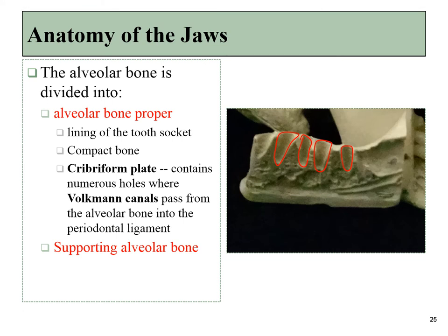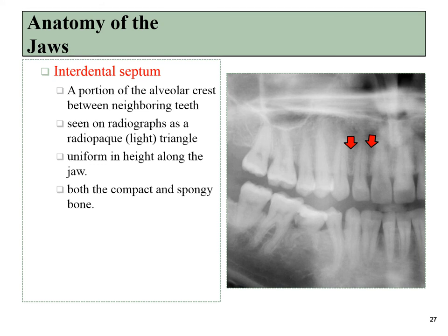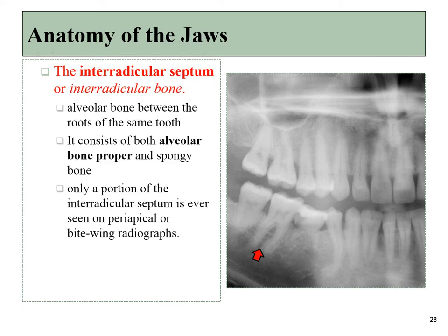There's one other place where you can see a cribriform plate — the ethmoid bone, which allows nerve endings to get from the brain into the nasal cavity for our sense of smell. The outer region of compact bone of the alveolar bone shows up more radio opaque on a radiograph — we call that the lamina dura — and right next to that is the lighter region of the periodontal ligament. The interdental septums are the regions of bone tissue between the teeth and should be of uniform height, while the interradicular septum is the portion of bone tissue found between roots of a multi-rooted tooth.